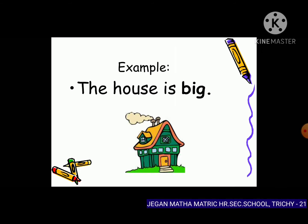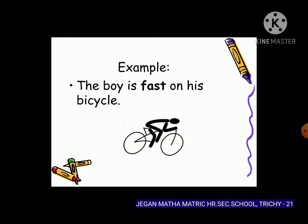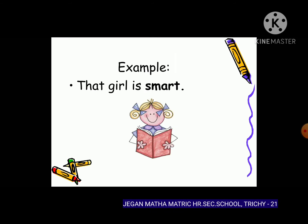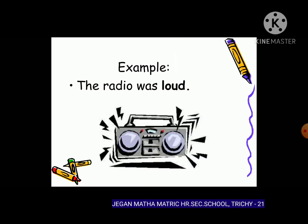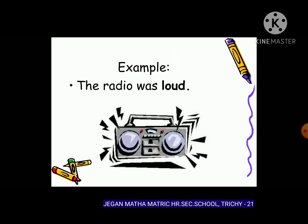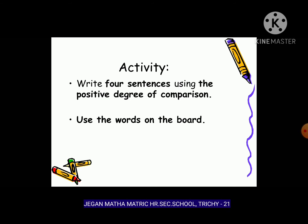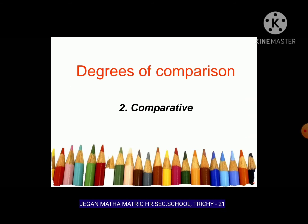For example with positive degree: 'The house is big' — only one thing. 'The boy is fast on his bicycle' — adjective: fast. 'That girl is smart' — adjective: smart. 'The radio was loud' — adjective: loud. Activity: write four sentences using the positive degree of comparison using the words on the board.